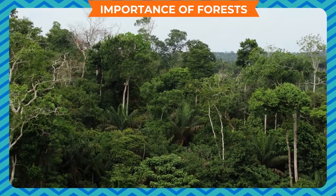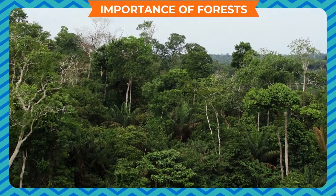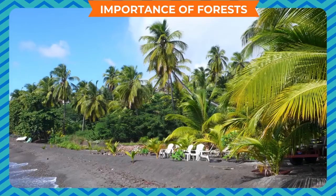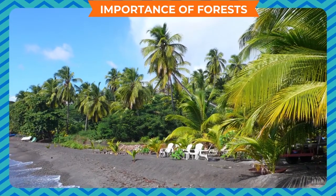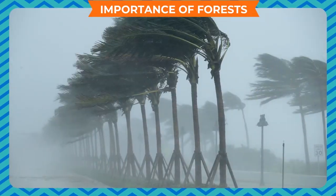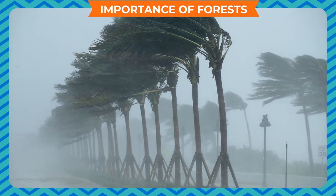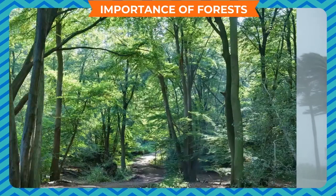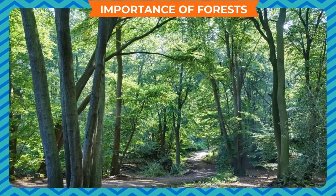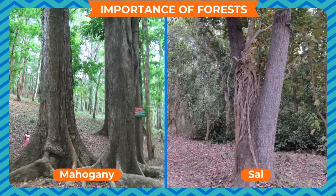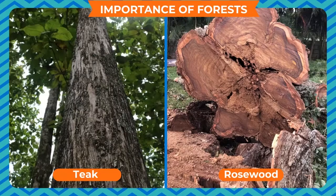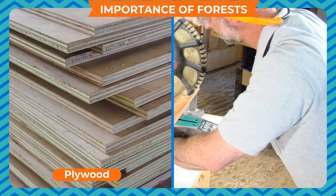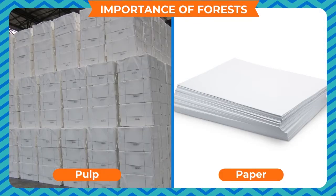Trees help in controlling global warming by absorbing carbon dioxide, which is the main greenhouse gas. Some trees act as windbreakers in coastal areas; they can withstand strong winds, thereby preventing the area from damage due to heavy winds. A variety of wood is available from trees like mahogany, sal, teak and rosewood. These are the sources of raw materials to many industries like plywood, paper and pulp.